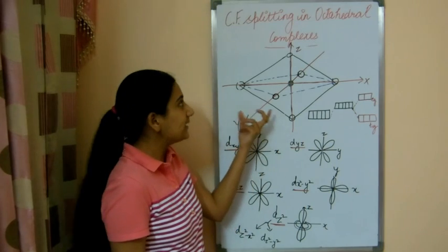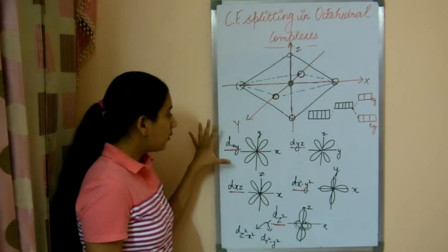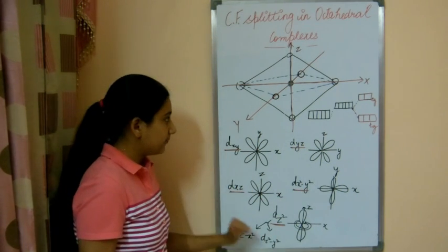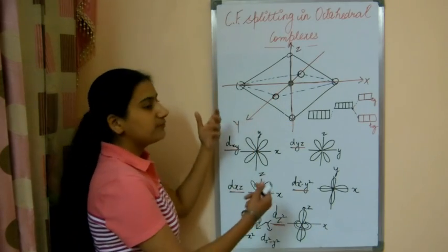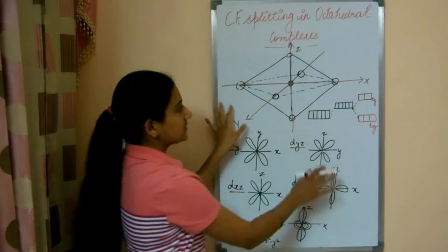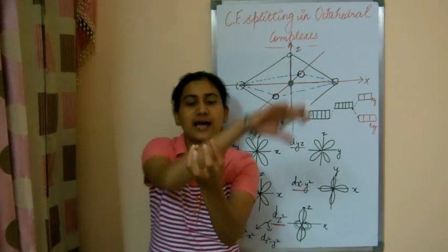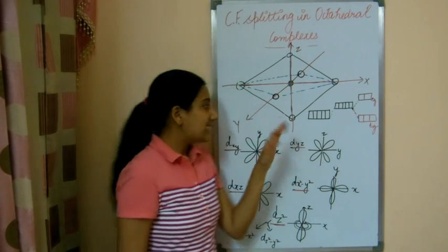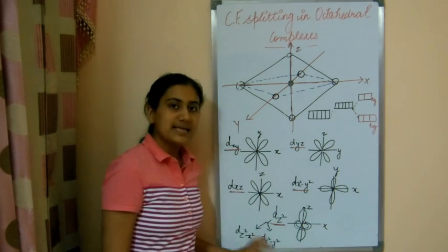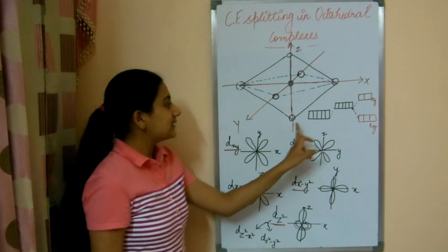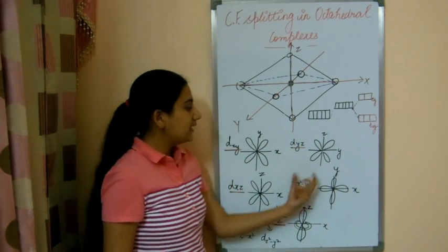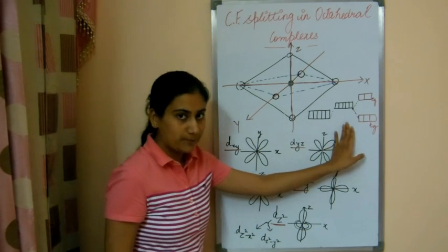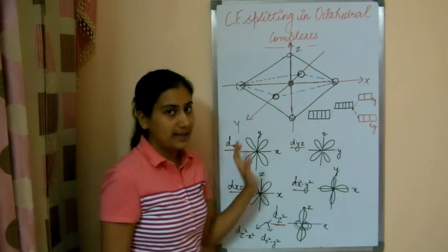How do they get affected in octahedral complexes? We know these are the 5 d orbitals and these are their orientations in space. At ground state, when no ligand is present and only the metal atom is present in space with nothing affecting it, all d orbitals will have the same energy. They will be at the same level and are called degenerate orbitals — that means orbitals of equal energy.